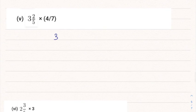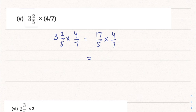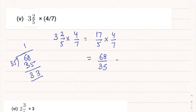Part 5: 3⅖ multiplied by 4/7. Convert 3⅖: 3 fives are 15, plus 2 gives 17/5. Multiplied by 4/7 — nothing cancels — so we simply multiply: 17 fours are 68 and 5 sevens are 35. Dividing 68/35: 35 ones are 35 and the remainder is 33, so the answer is 1 and 33/35.